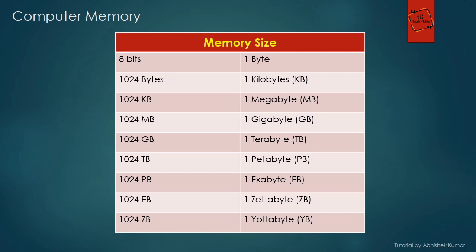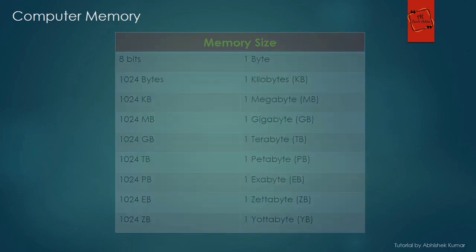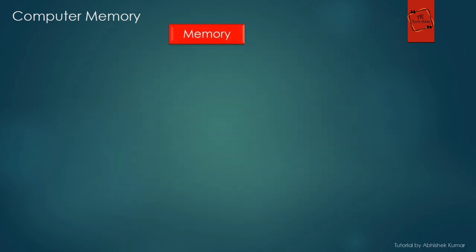Eight bits make up one byte, which is occupied by one character. But as you go for higher memory spaces, the unit changes — like 1024 bytes is equal to one kilobyte, then 1024 kilobytes is equal to one megabyte, and so on.